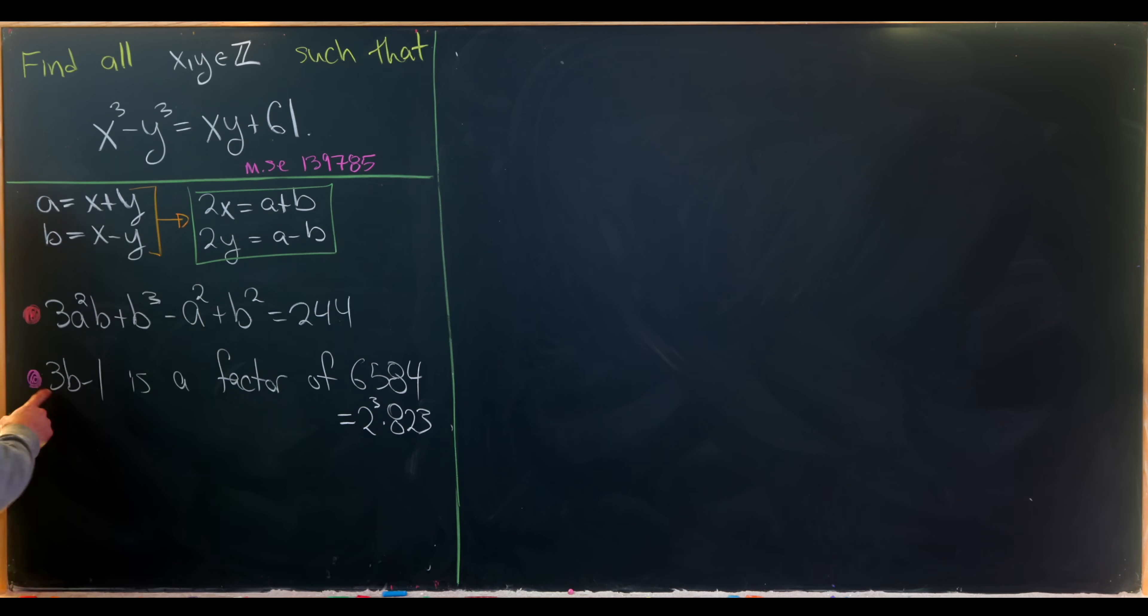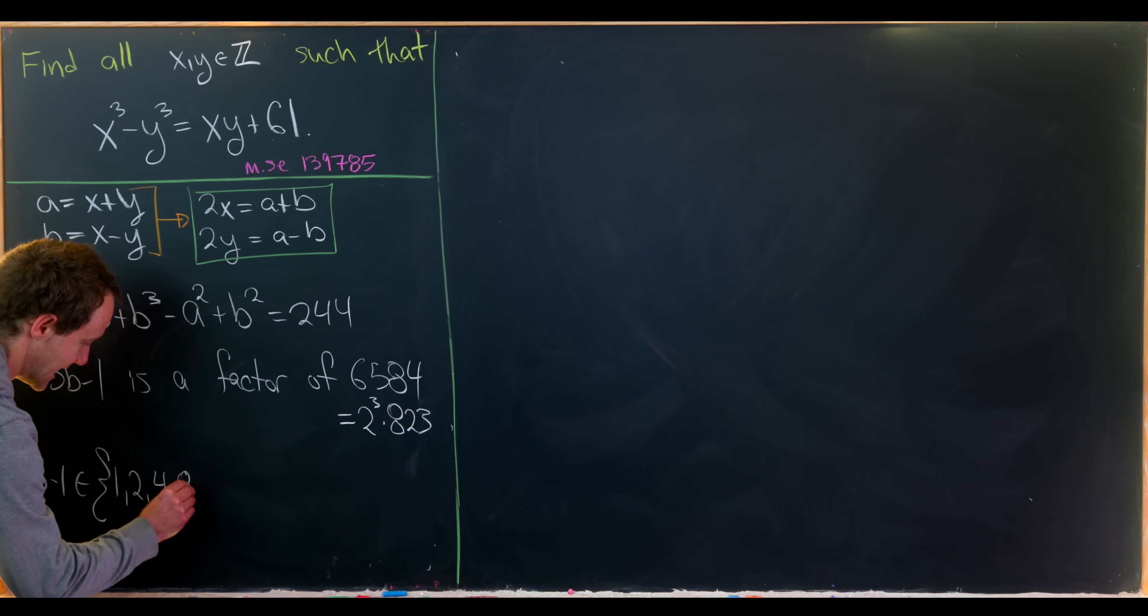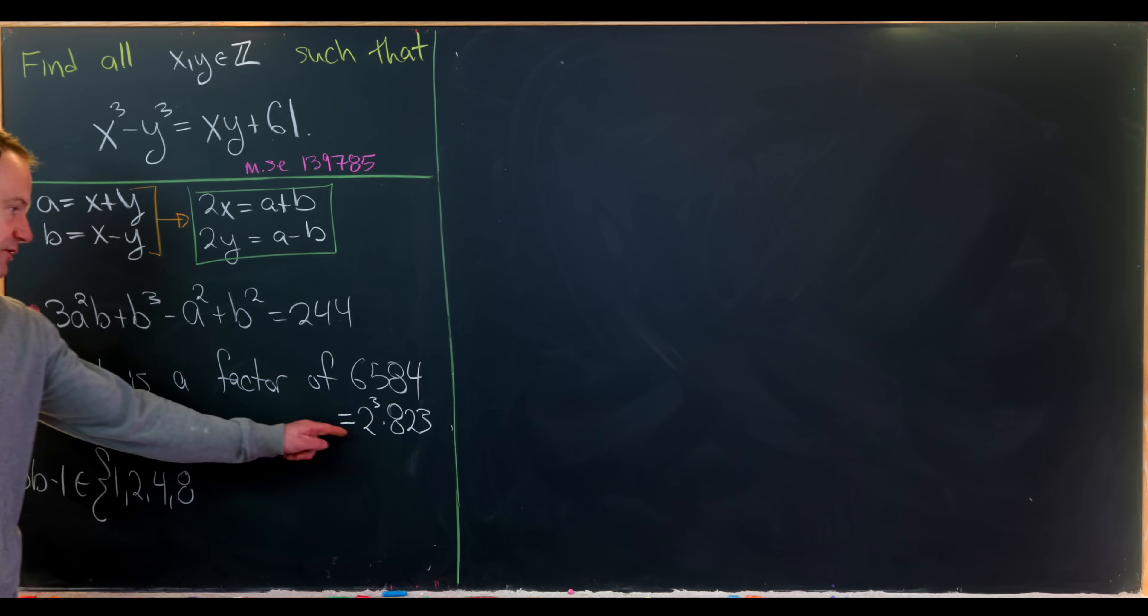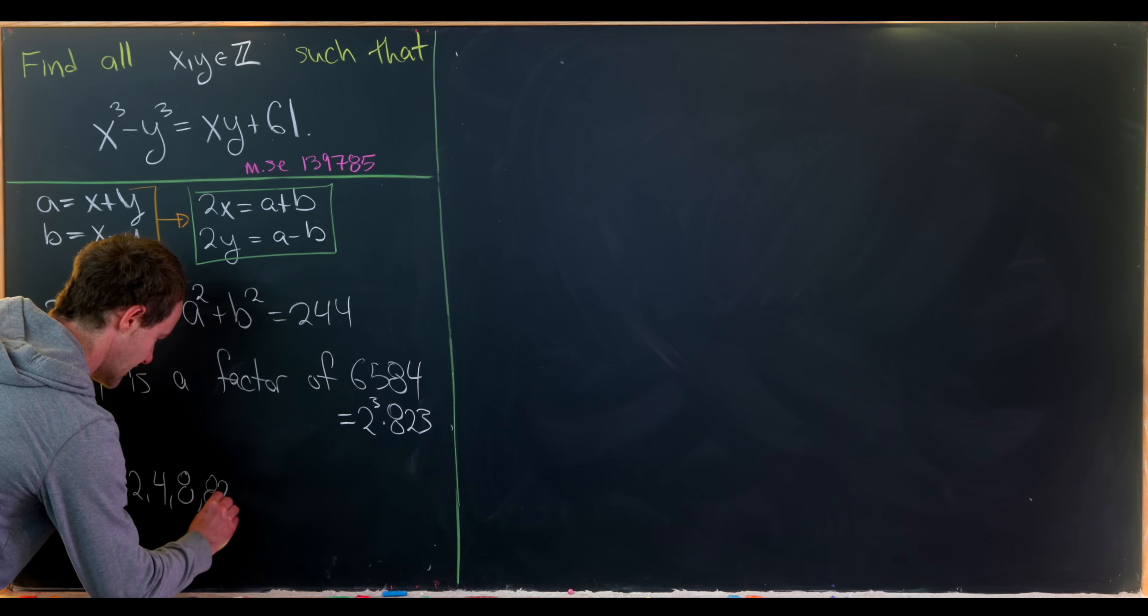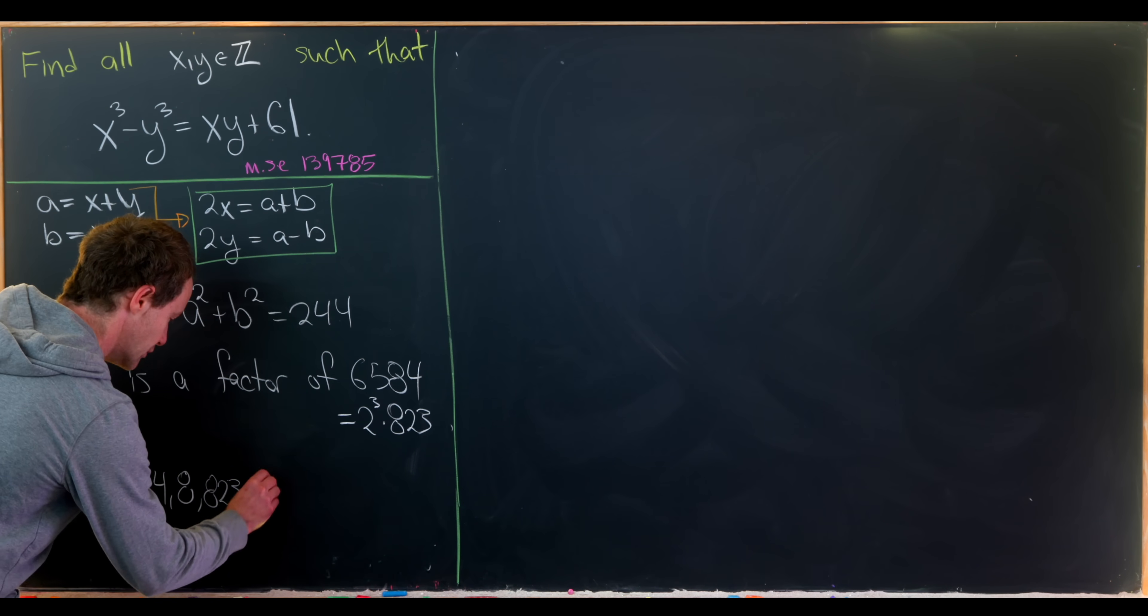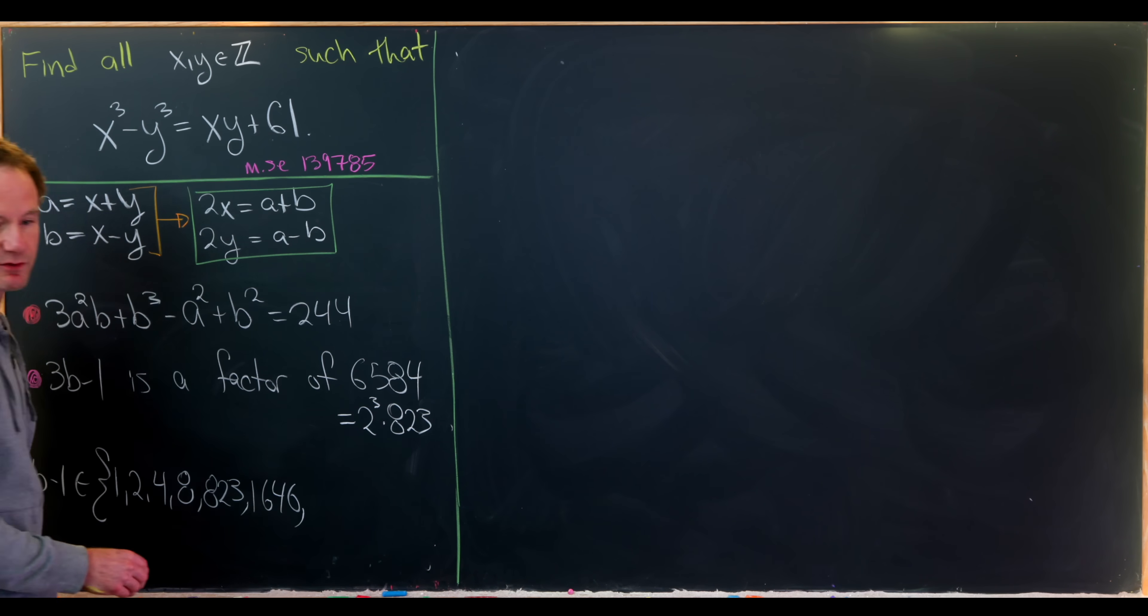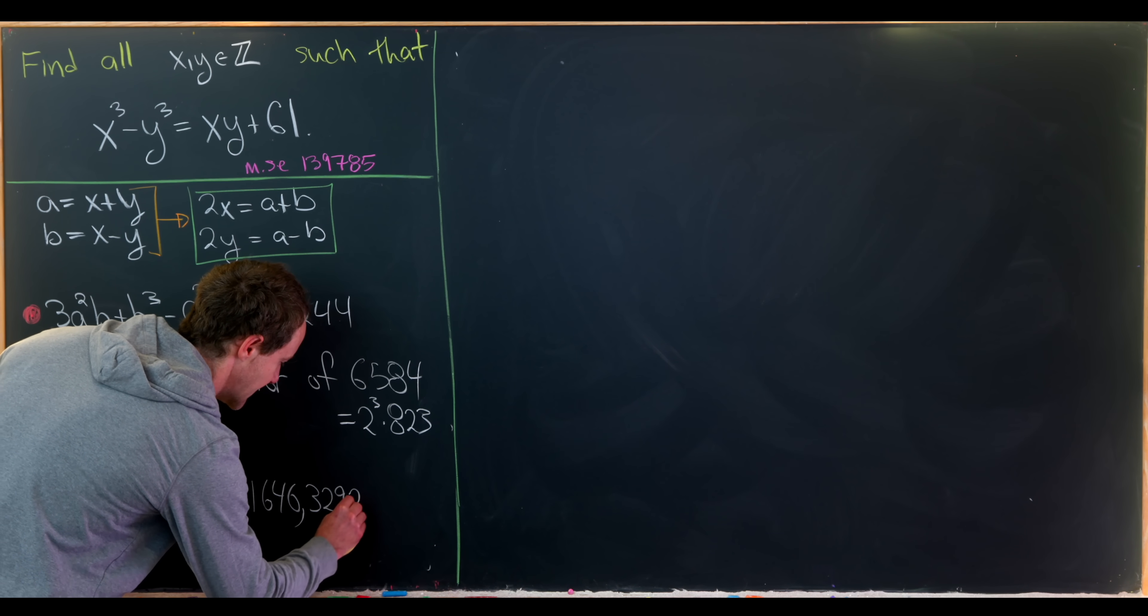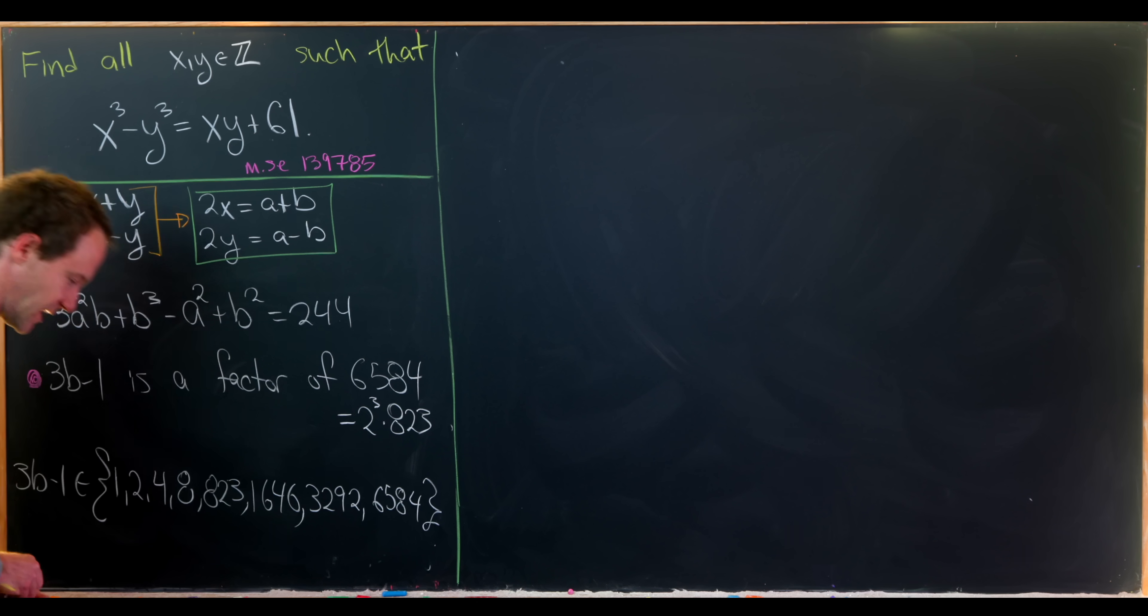The fact that 3b minus 1 is a factor of this means that 3b minus 1 must come from the following set: 1, 2, 4, 8 - those are all of the powers of 2 that divide into 6584. We can also have 823, 2 times 823 which is 1646, 4 times 823 which is 3292, and then the whole thing 6584. So those are our possibilities.